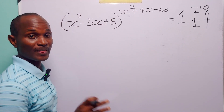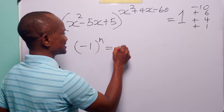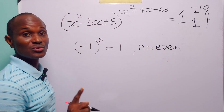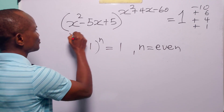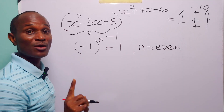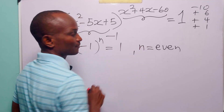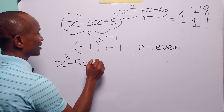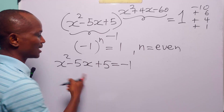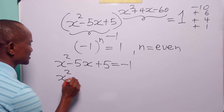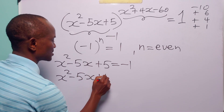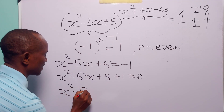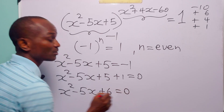There is one more case to consider. We know that (-1)ⁿ = 1 when n is an even number. So we will find the values of x that make the base equal to -1, then check whether those values also make the exponent even. We set x² - 5x + 5 = -1 and rearrange to get x² - 5x + 6 = 0.